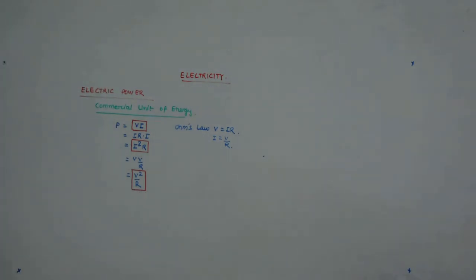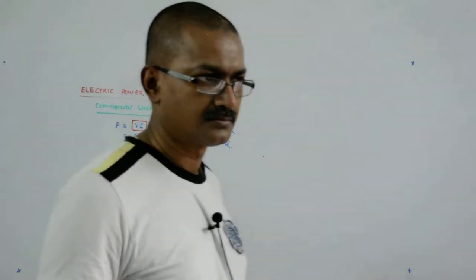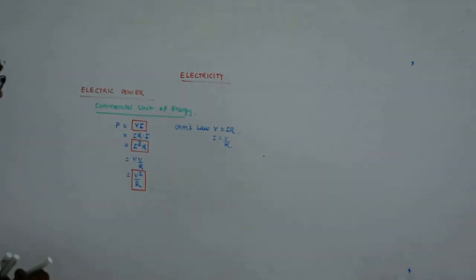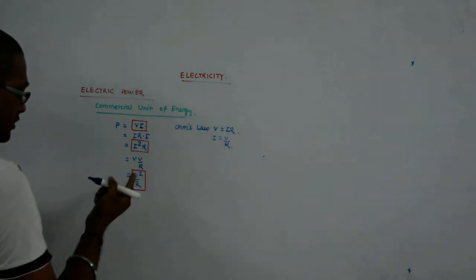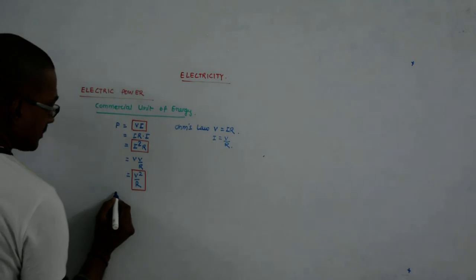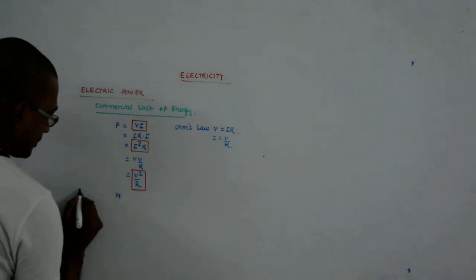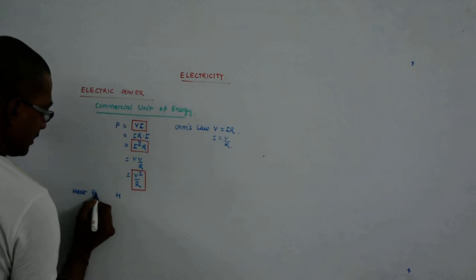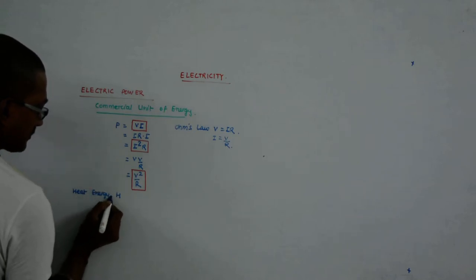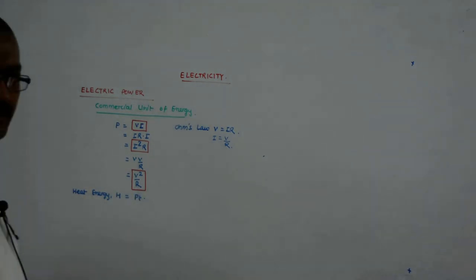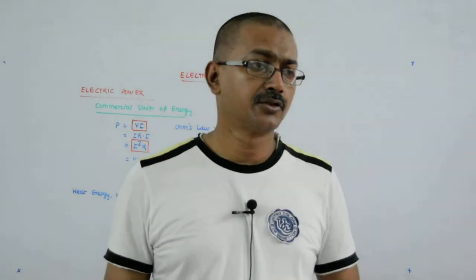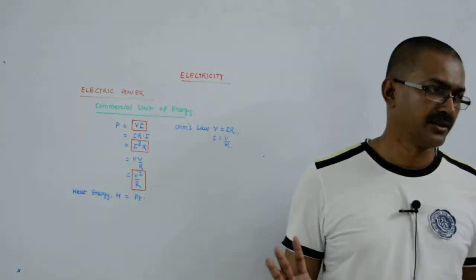So these are the three forms of power. But this is power, this is joule per second. For energy, that is for H the heat energy, H is equal to P into T. You multiply any of these powers by T, it gives you the amount of energy that you are dissipating.